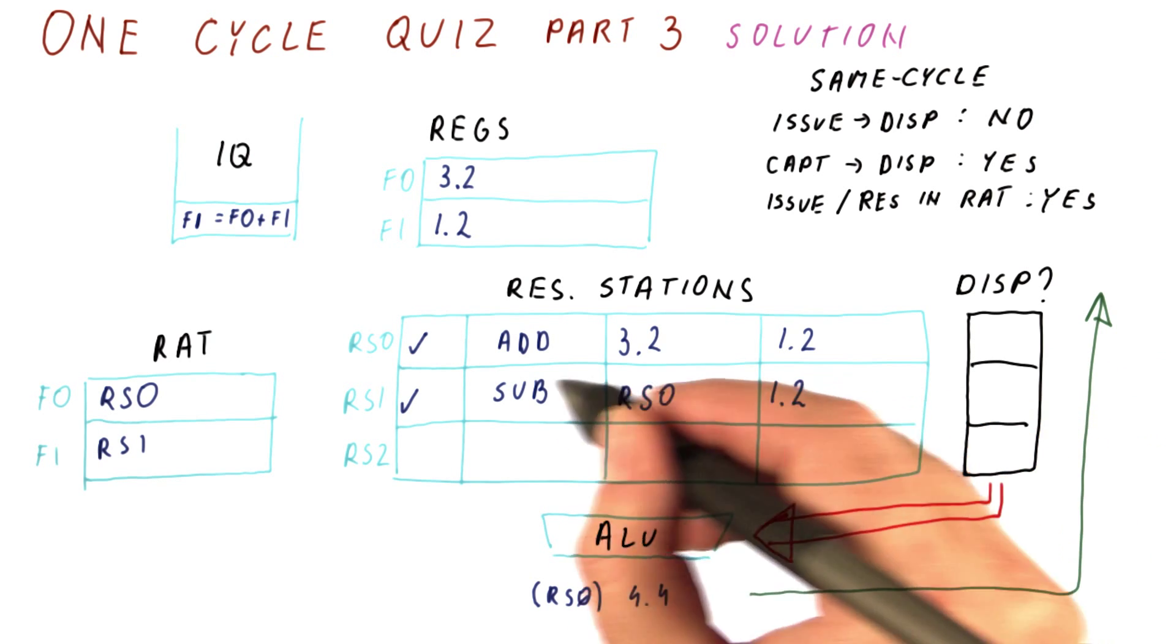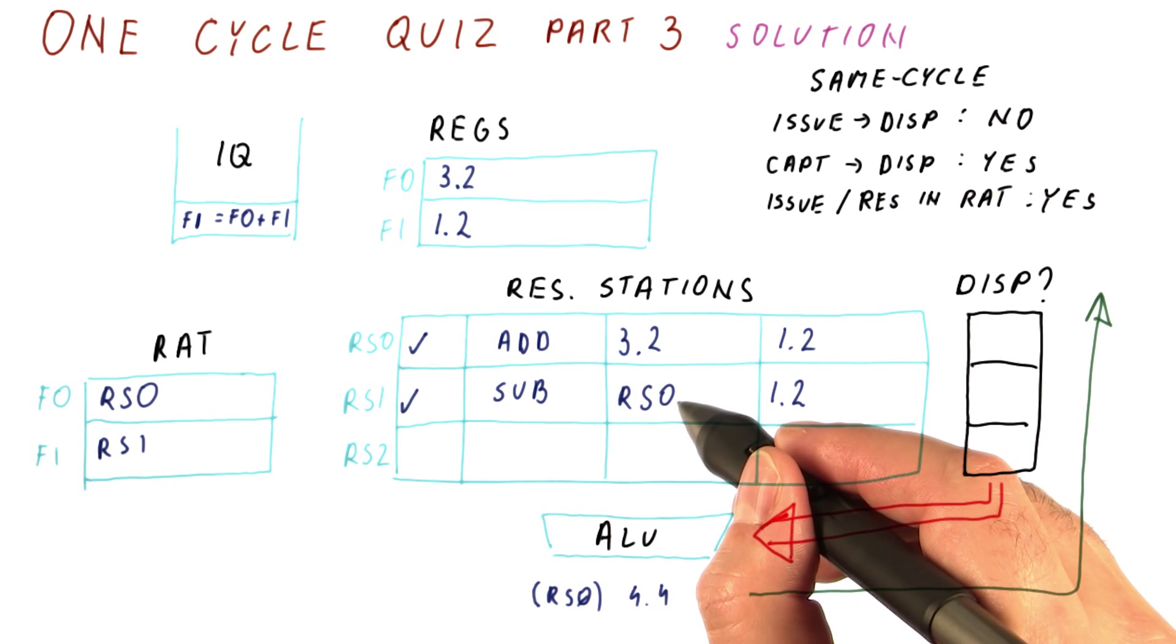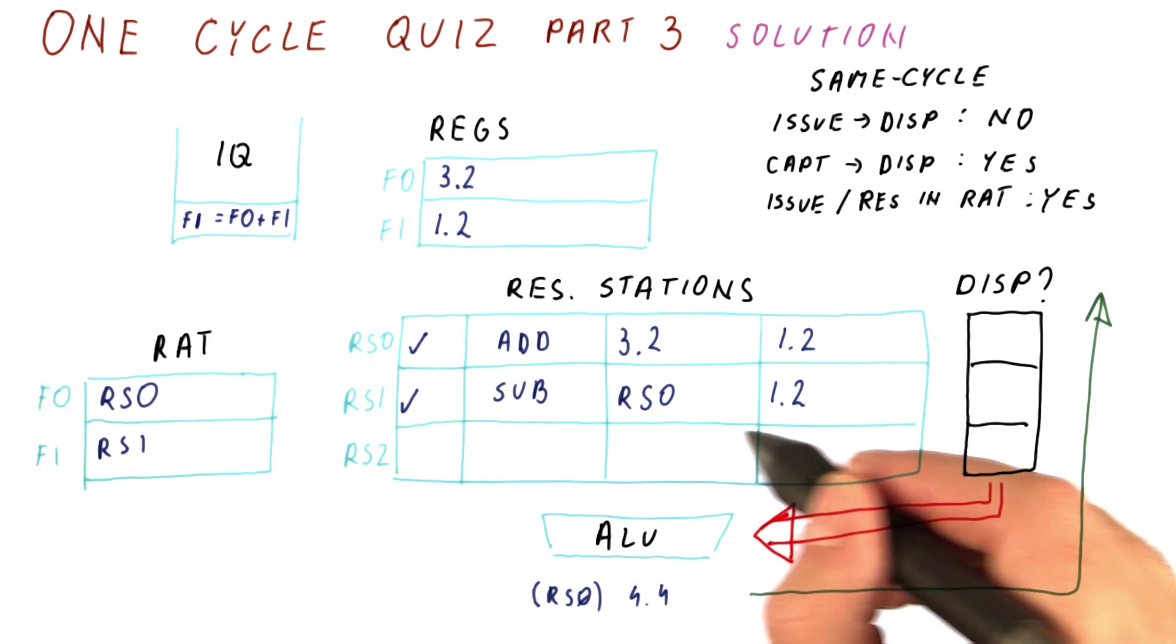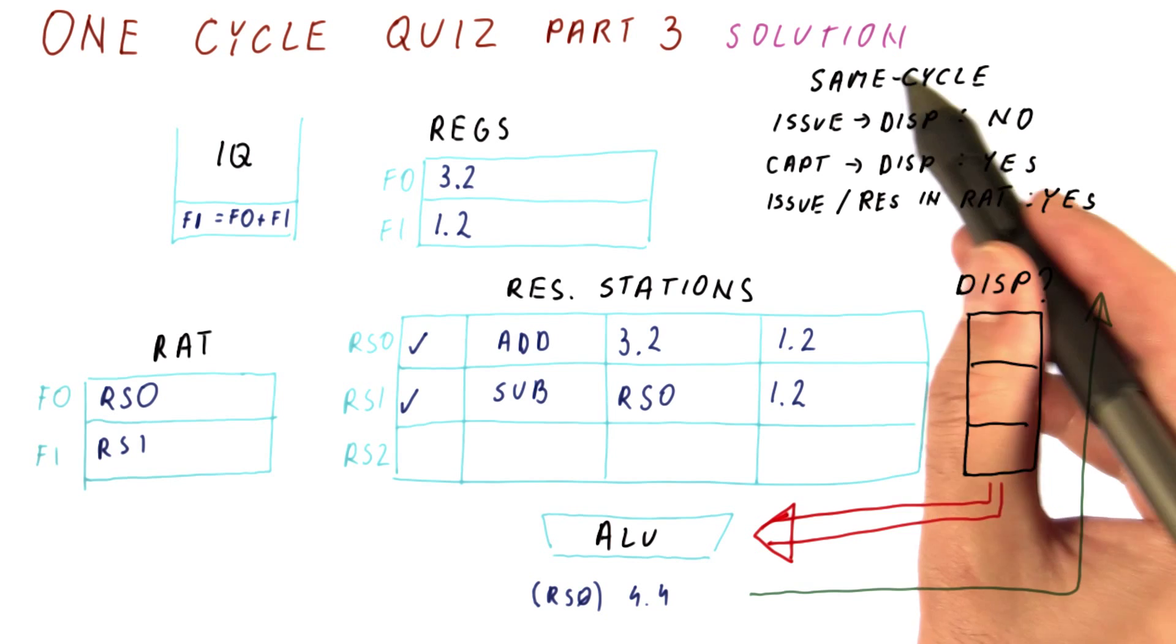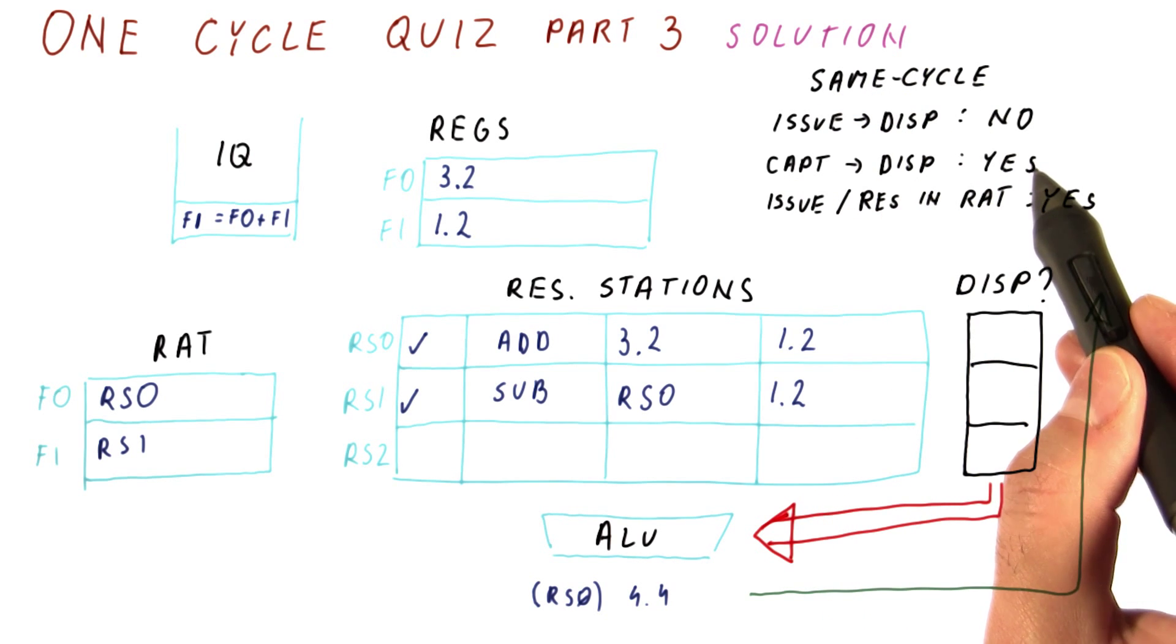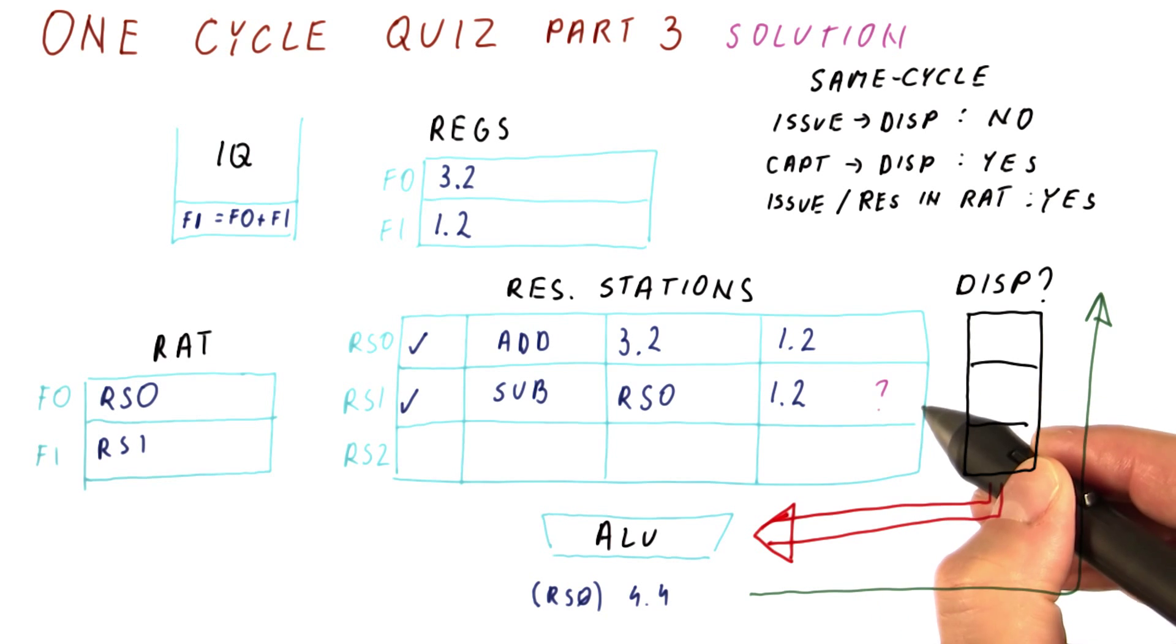This instruction here will capture its last remaining operand during this cycle, so it becomes eligible for dispatch after that. We said that in the same cycle, capture and then dispatch is allowed. So this instruction here is a candidate for dispatching.